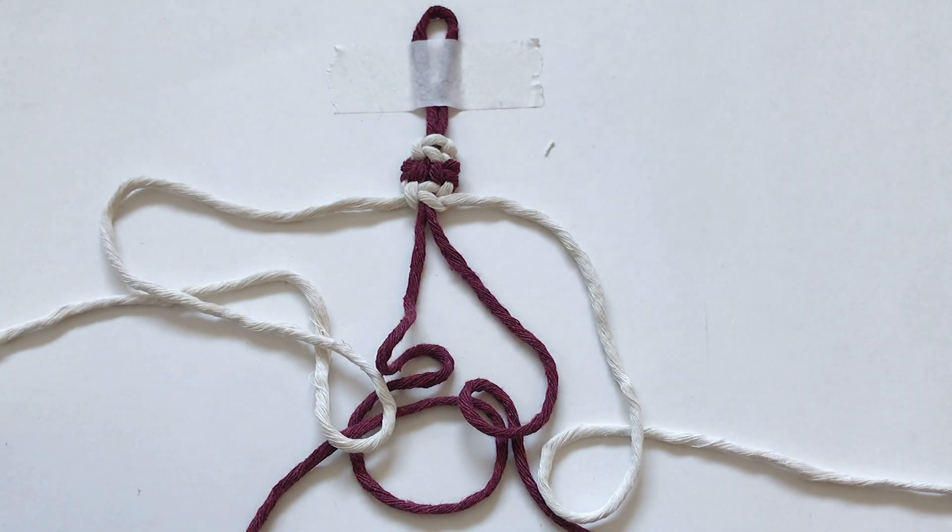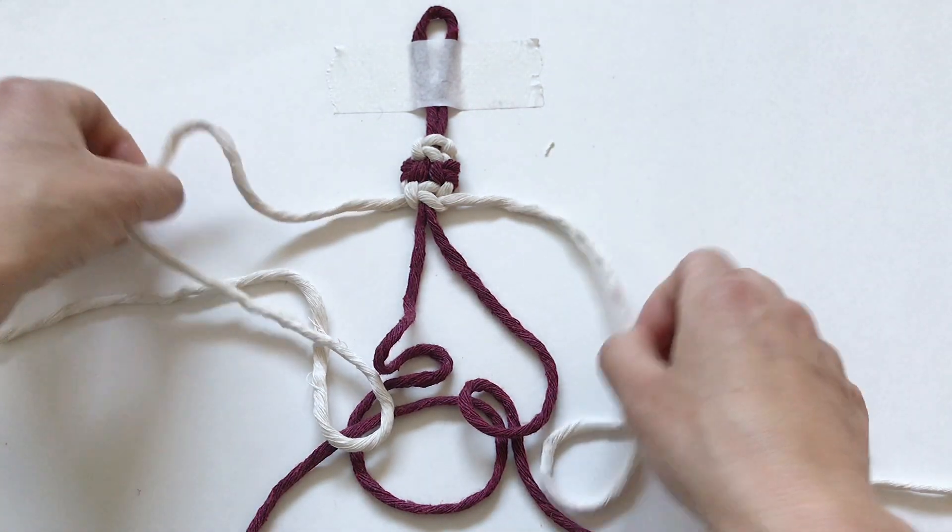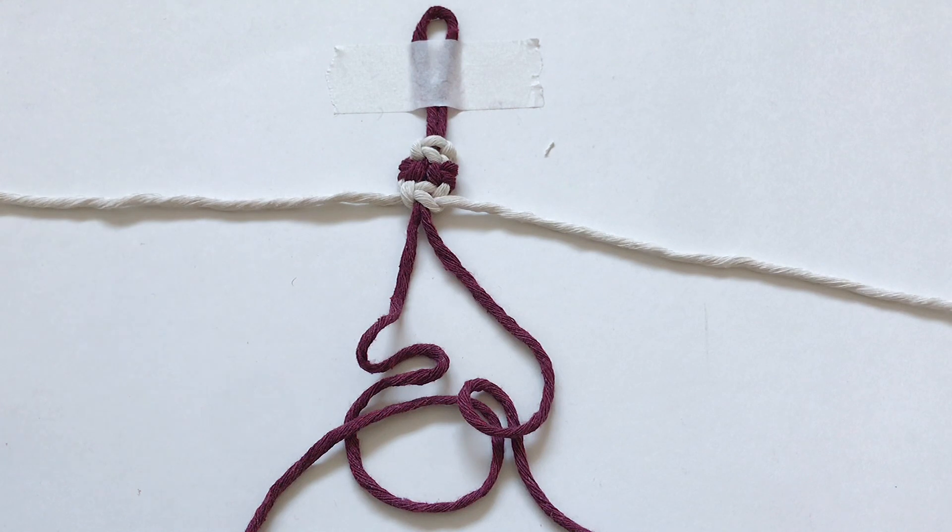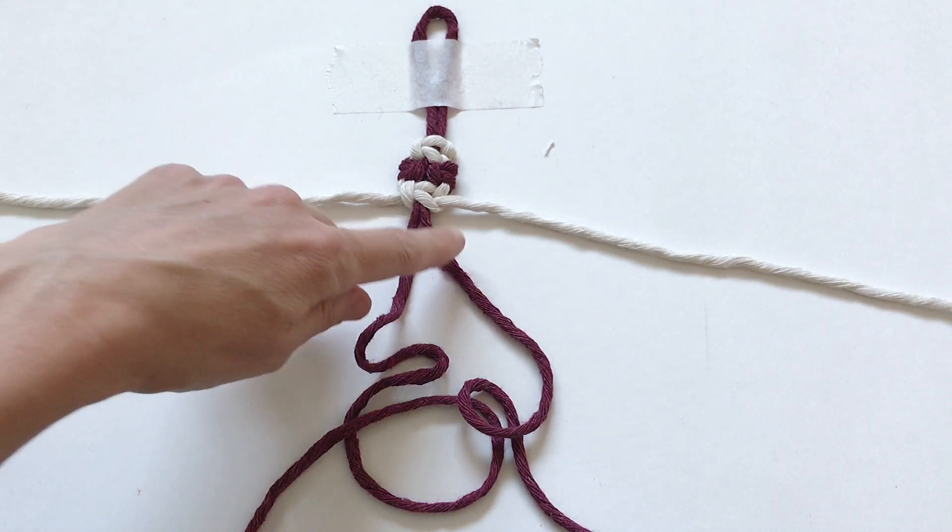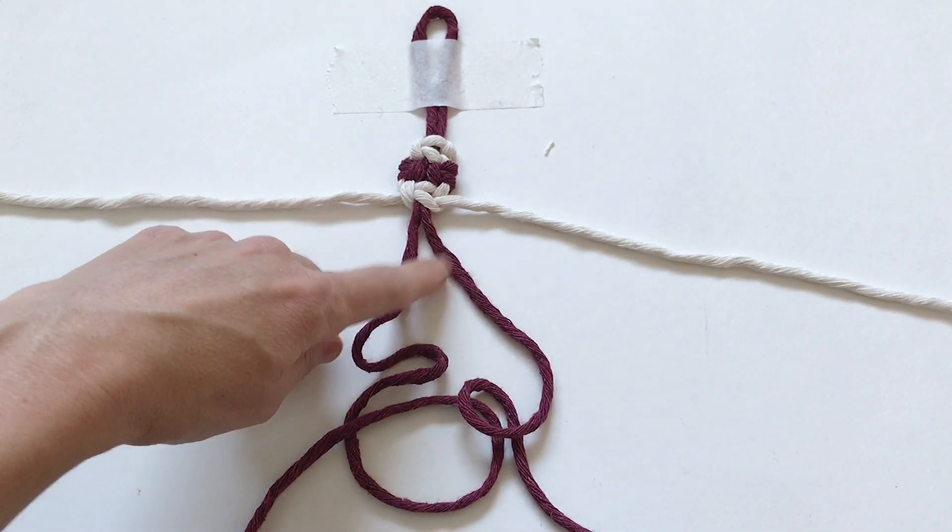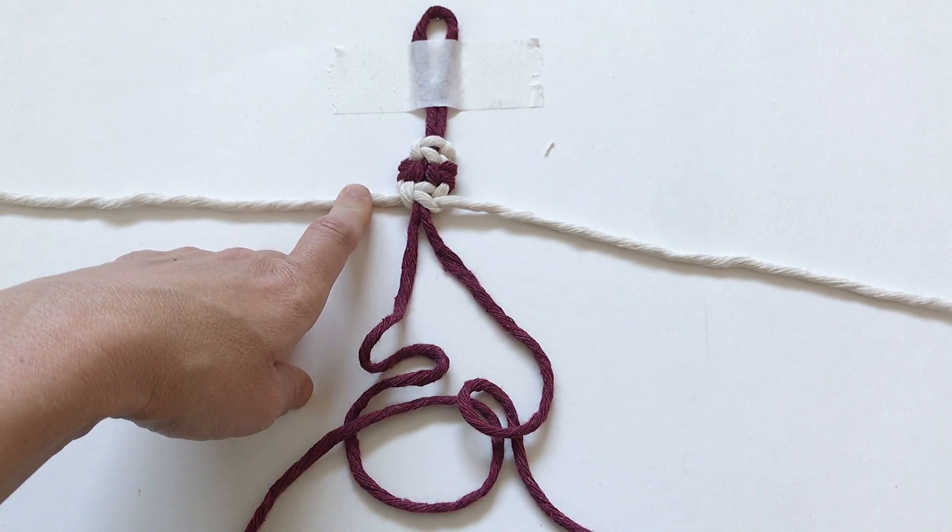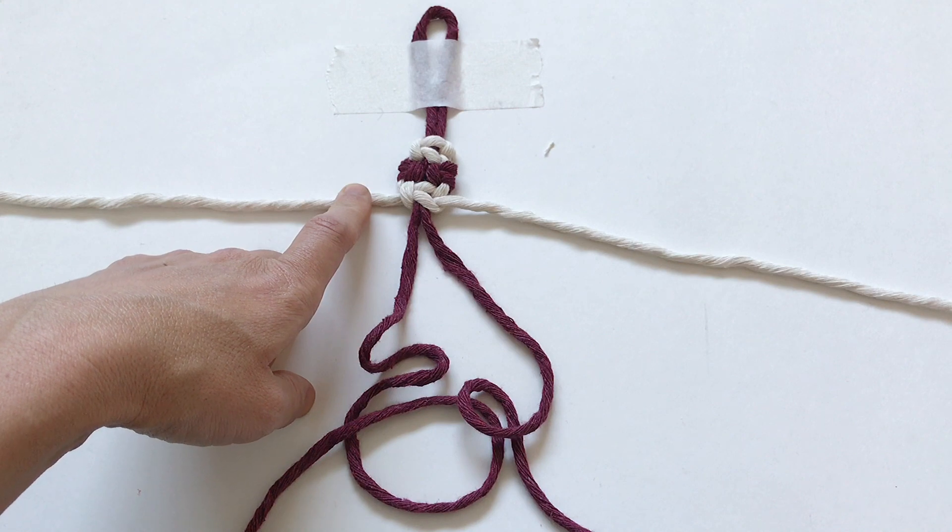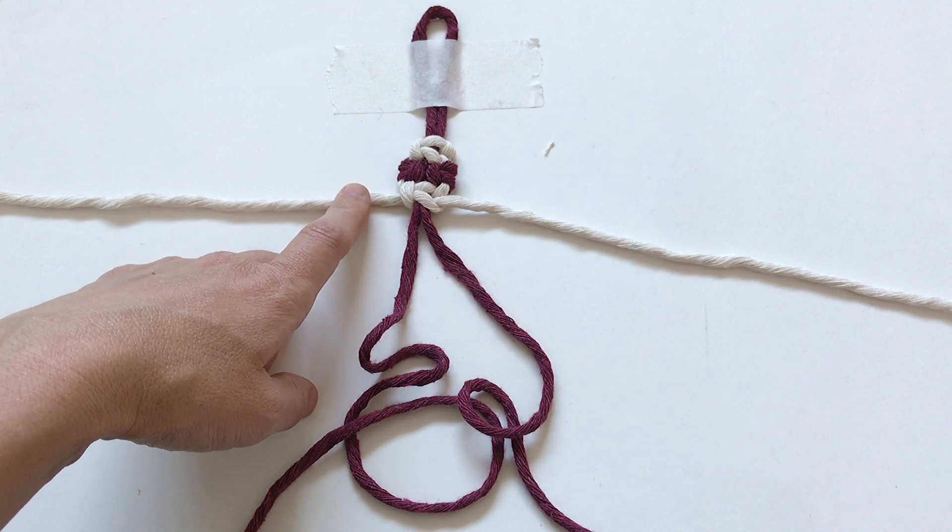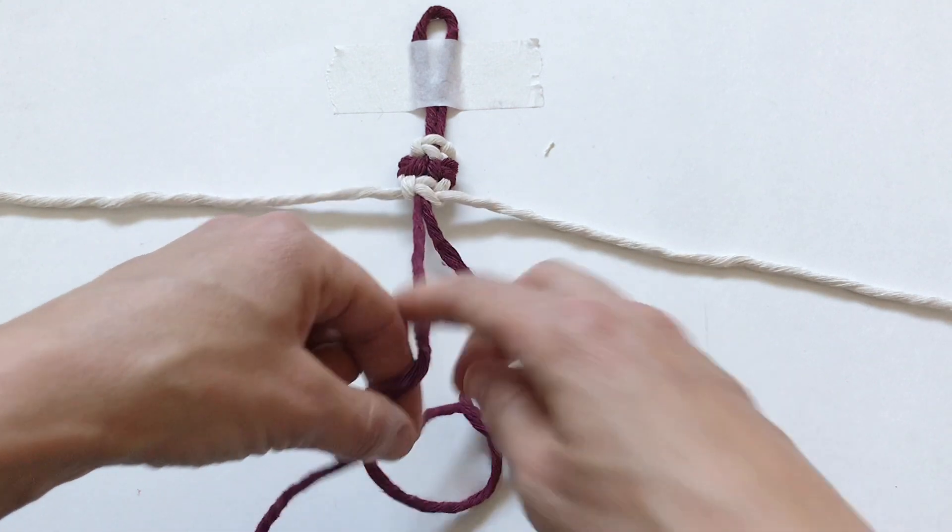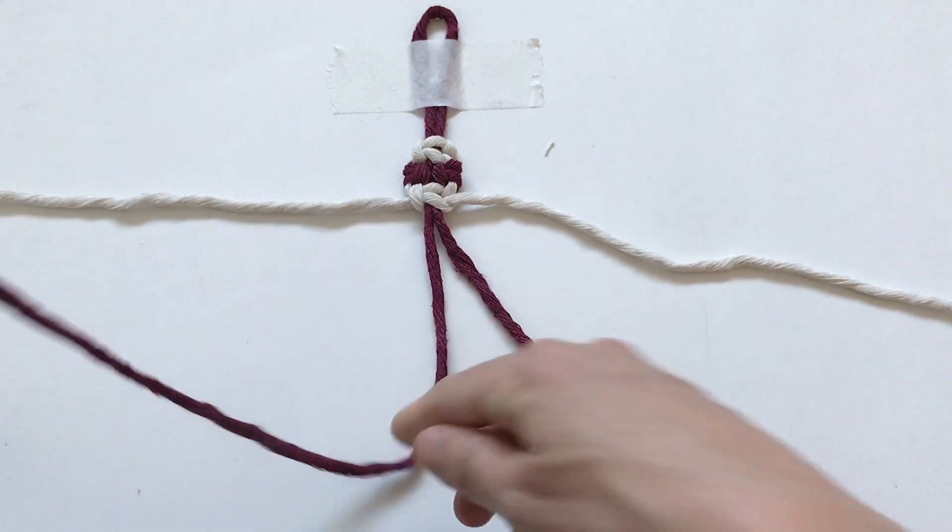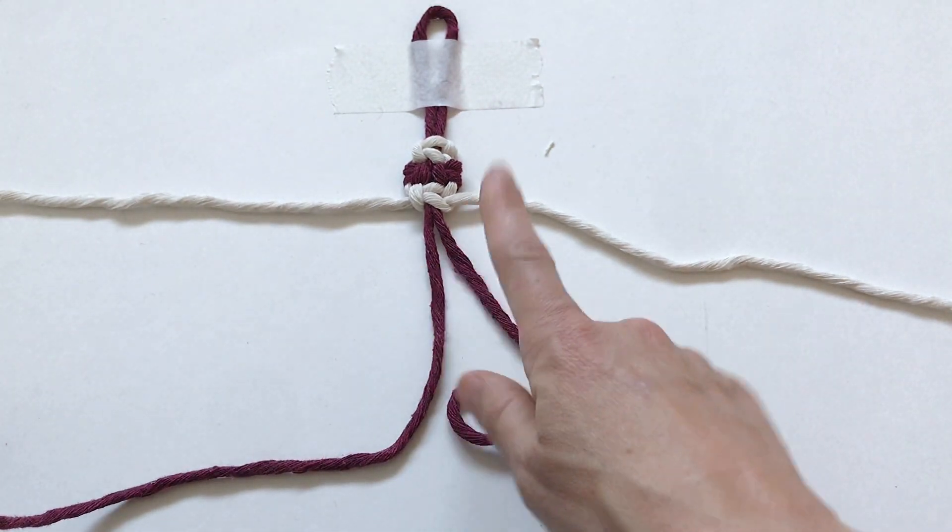You just want to continue this pattern and make it however long you want. I will say that these two working cords are going to use a lot more, almost double the amount of rope that the white one does. So if you're planning on making a strap to a purse, a bracelet, or plant hanger, plan for that and make this one nearly twice the length.